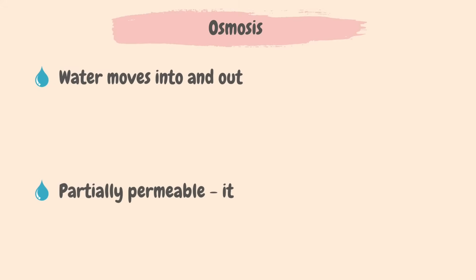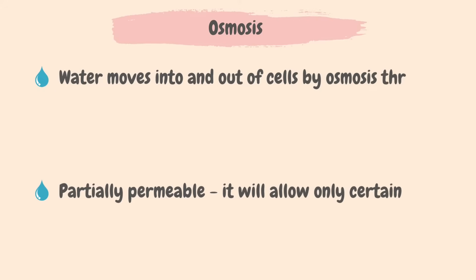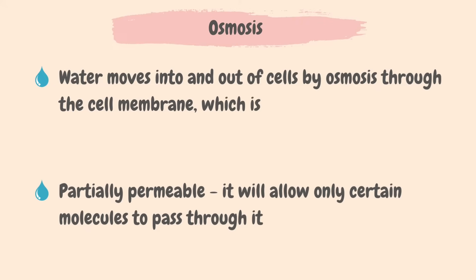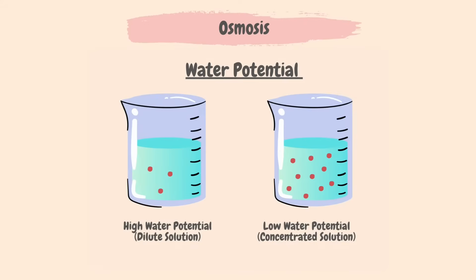Water moves into and out of cells through the cell membrane, which is partially permeable. This process is called osmosis. Partially permeable means that it will allow only certain molecules or ions to pass through it. In the case of diffusion, we were talking about the movement of particles, but osmosis is about the movement of water molecules. When talking about water, we cannot use the term concentration anymore, because concentration shows the amount of substance dissolved in water. Since water cannot be dissolved in water, we use another term instead: water potential.